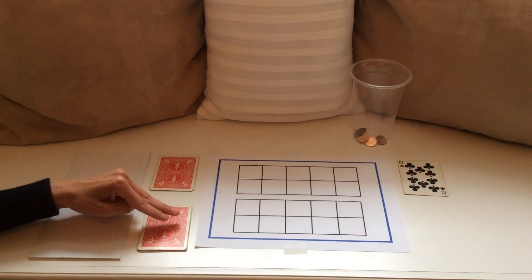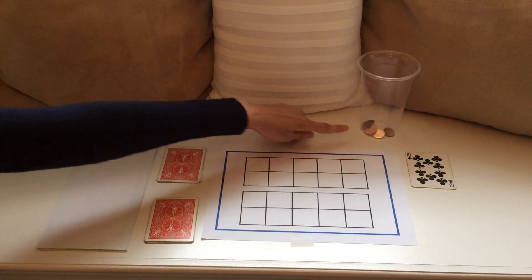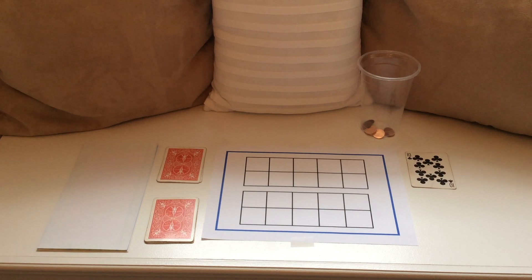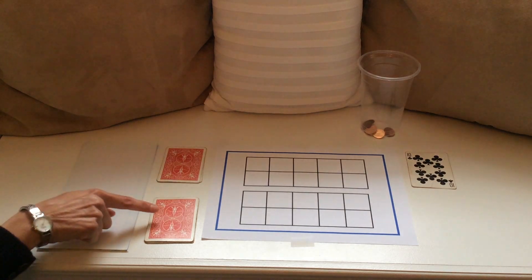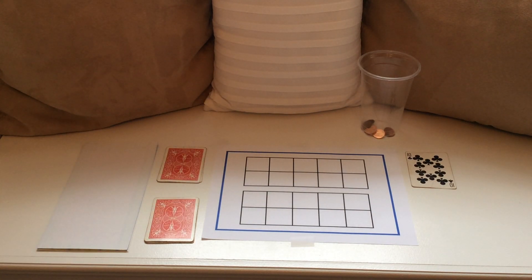Here I have some playing cards, a double 10 frame, and some pennies as counters. I've set up the playing cards as a vertical addition sentence.